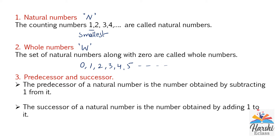Next topic: predecessor and successor. The predecessor of a natural number is the number obtained by subtracting 1 from it. For example, what is the predecessor of 19? The given number is 19 minus 1. When you subtract 1 from the given number you get its predecessor. 19 minus 1 equals 18. The successor of a natural number is the number obtained by adding 1.